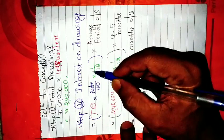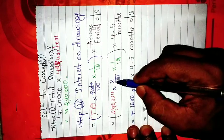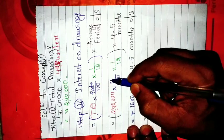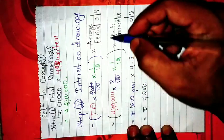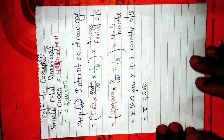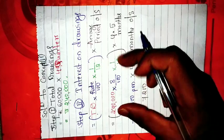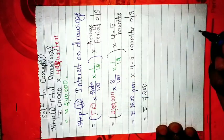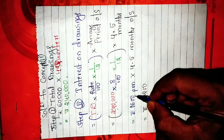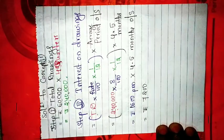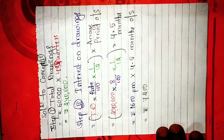Step 2: Interest on drawings. The formula is: total drawings × rate ÷ 100 × 1/12 × average period outstanding. Total drawings as per Step 1 is two lakh forty thousand. Rate is 8 ÷ 100 as given in the question. We multiply by 1/12 because 8% is per annum — so for 1 month it is 1/12. Then multiply by 4.5, the average period outstanding. So: two lakh forty thousand × 8/100 × 1/12 = one thousand six hundred per month. For 4.5 months: one thousand six hundred × 4.5 = seven thousand two hundred. Interest on drawings is rupees seven thousand two hundred.